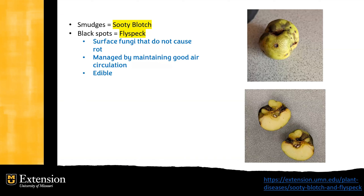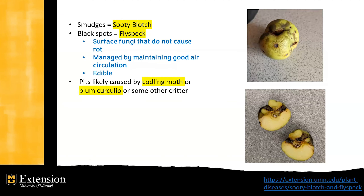The third thing — the pits that you see on the fruit — those are probably caused by a critter of some sort. Codling moth, perhaps, or plum curculio. Those are two very common bugs that might be attacking the fruit.